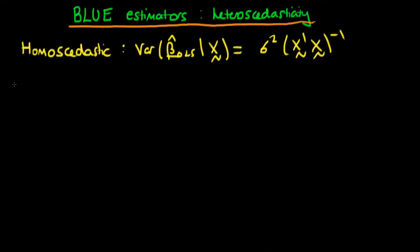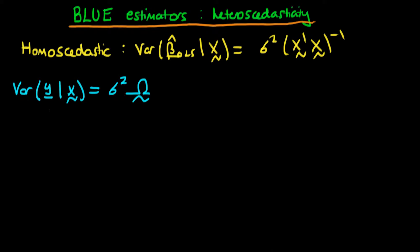Now if we assume we have heteroscedasticity, this means that the variance of y given x is equal to sigma squared times some diagonal matrix omega, where the diagonal matrix omega is not equal to the identity matrix. And we're going to use this to help us derive the variance of OLS estimators in the presence of heteroscedasticity.